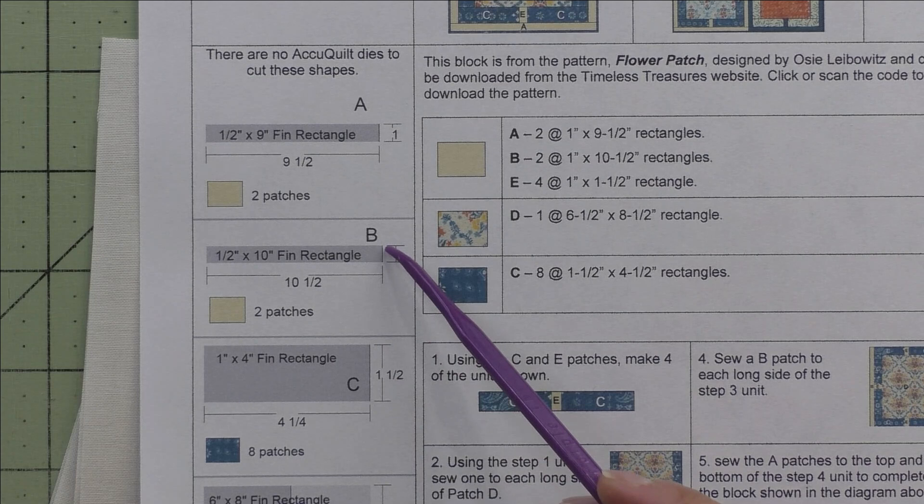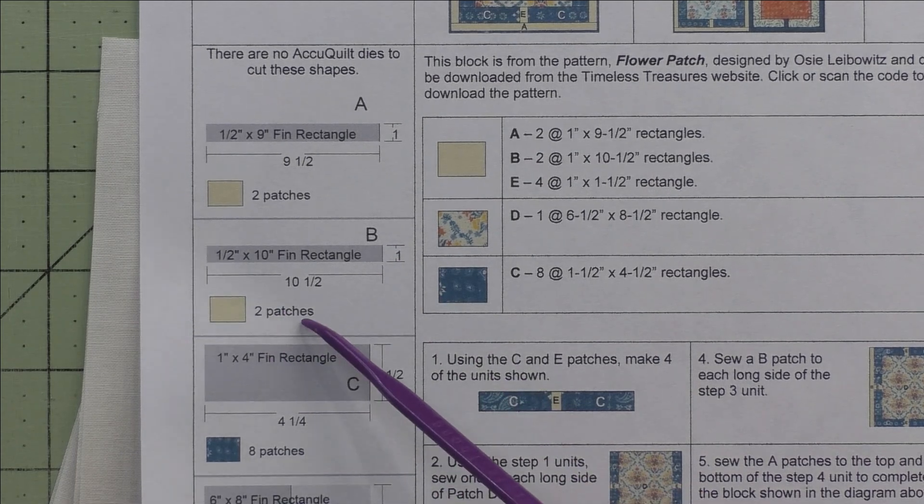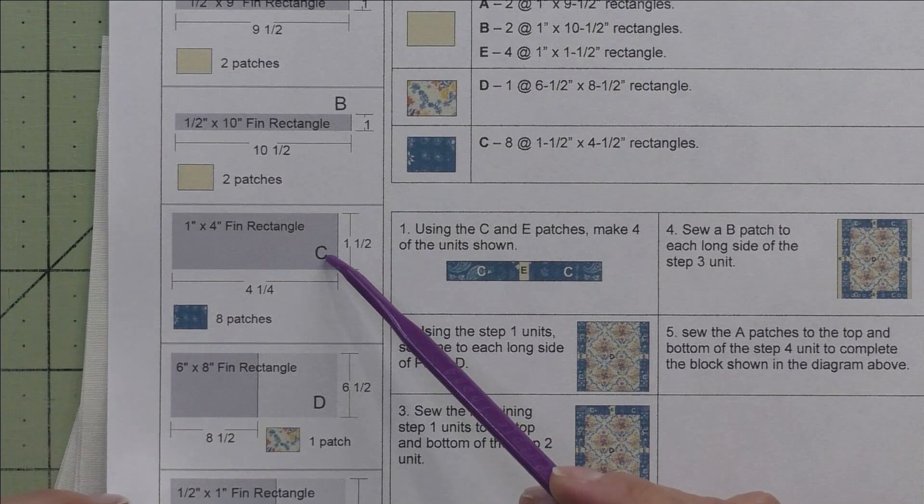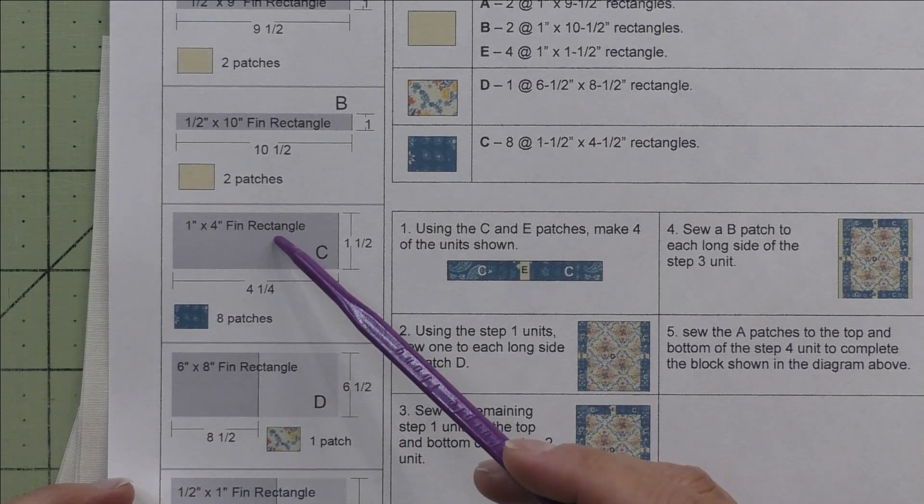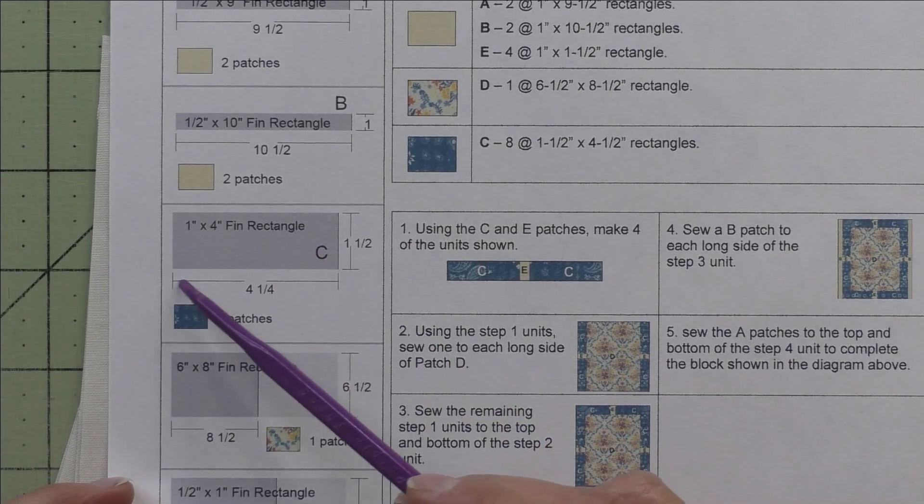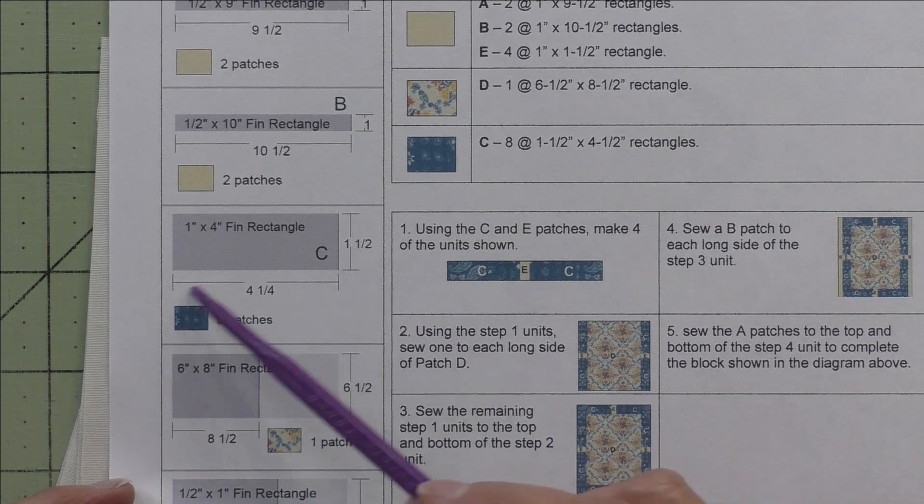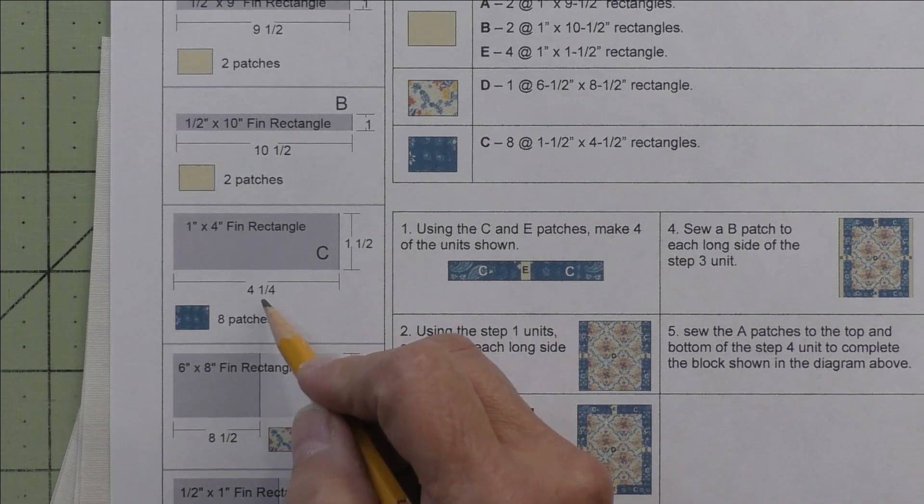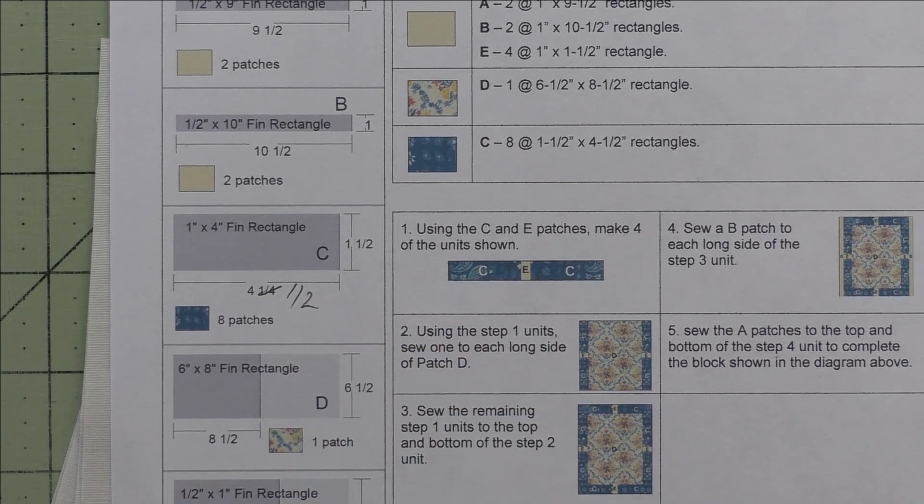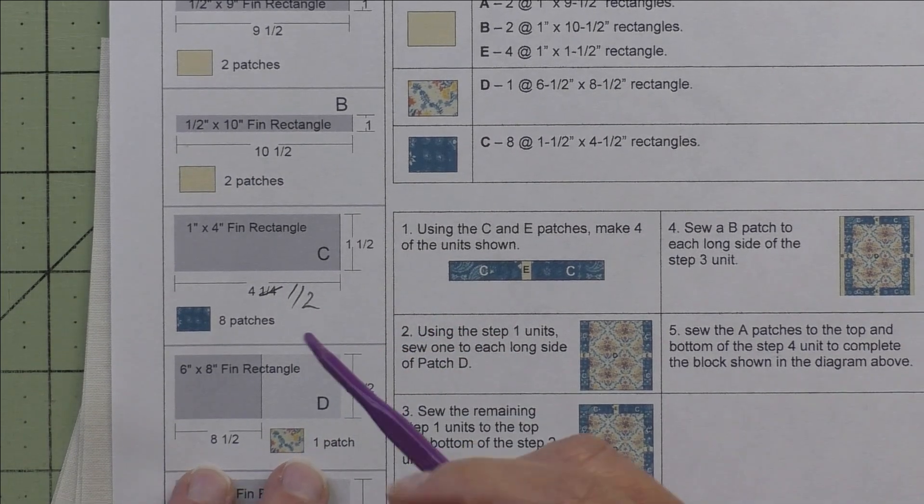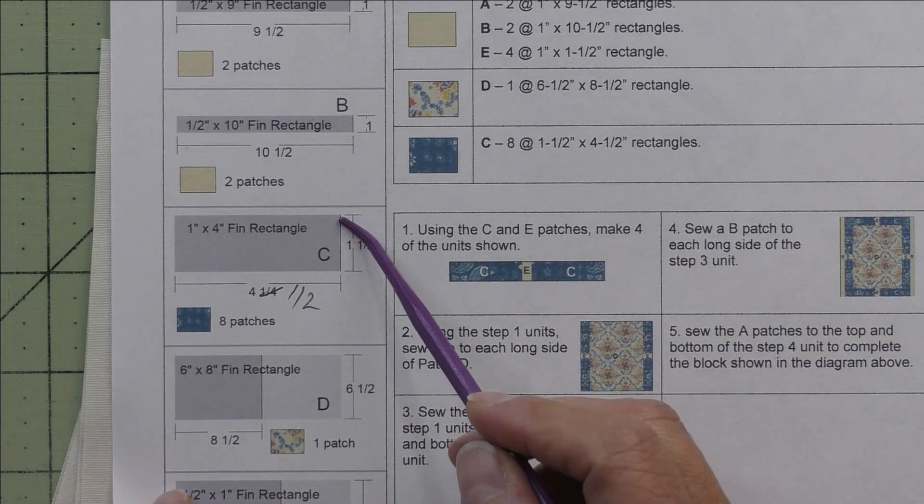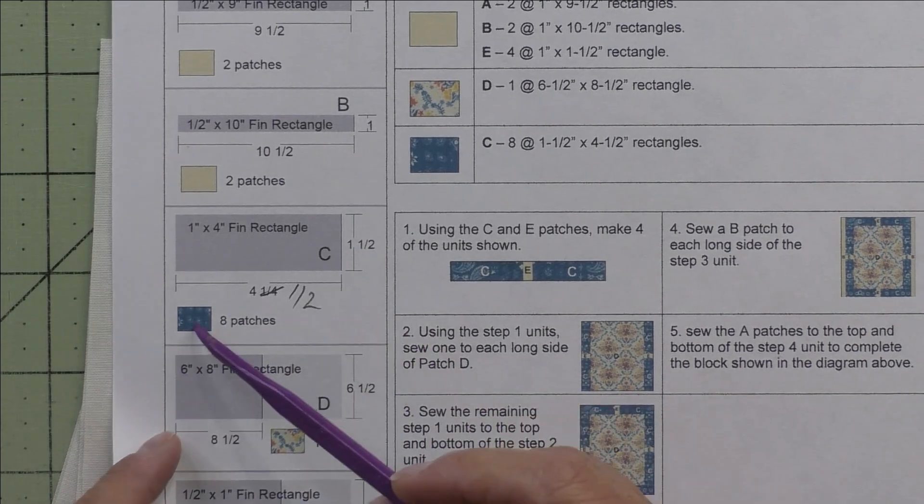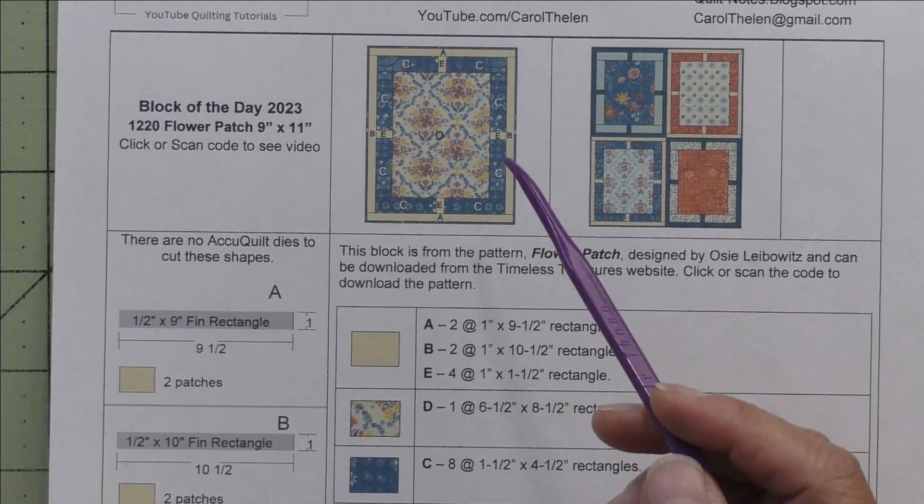Patch C is a 1 inch by 4 inch finished rectangle. We cut 4.5 inches—I will have to fix this—we cut 4.5 inch by 1.5 inch rectangles, and these are the little frames, the blue frames in this case, around the fabric in the center.